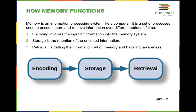The very first step is encoding information, which involves the input of information into the memory system. We're also going to talk about ways in which we may fail to encode information properly and how that impacts how we remember information down the road. We have what's known as storage, because we can store things into short-term memory and then eventually into long-term memory through a series of processes and procedures.